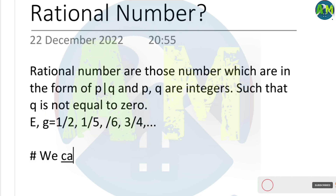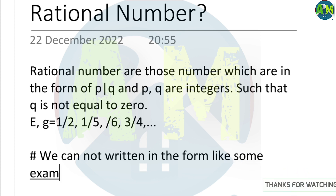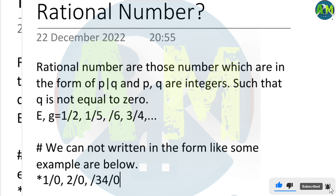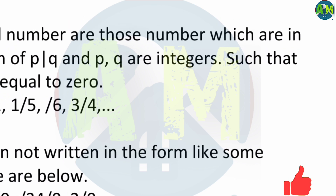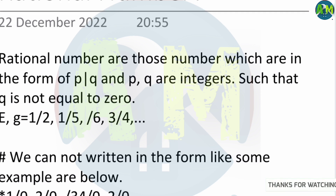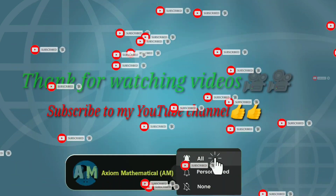We cannot write rational numbers in a form where the denominator is zero. For example, one by zero, two by zero, 34 by zero, and two by zero are not rational numbers, because in the definition p by q, q must not be equal to zero.